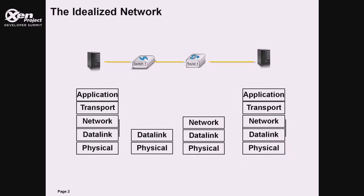The view of the network as taught in schools looks something like this — systems with a network in between, containing switches and routers. Pretty simple. But as we all know, the reality is quite different. Middleboxes are commonplace in today's networks, existing in as many numbers as switches and routers.